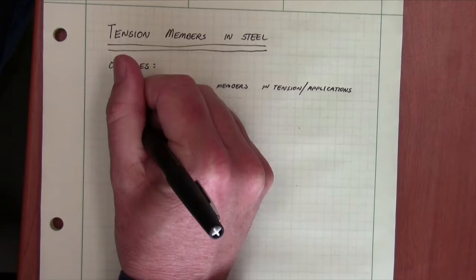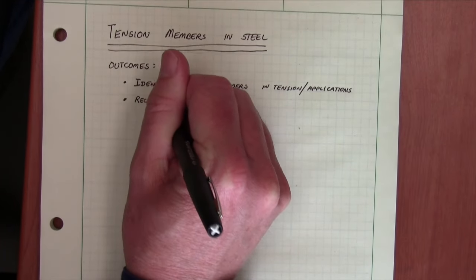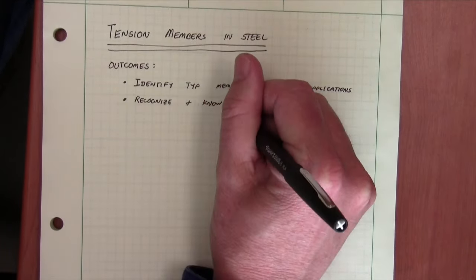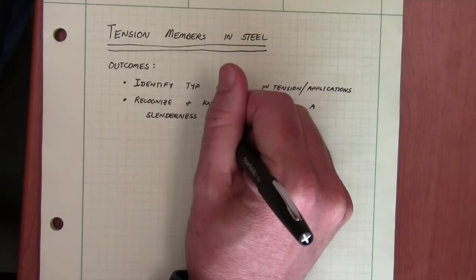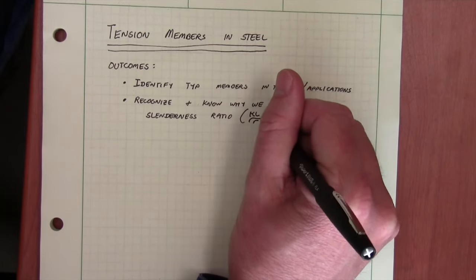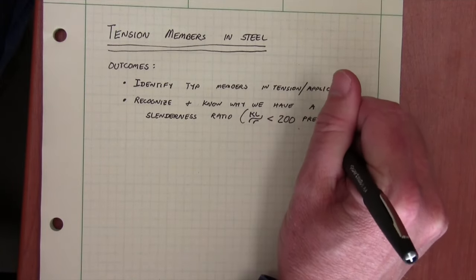Second, we'd like to recognize and know why we have a slenderness ratio with steel. The slenderness ratio is often KL over R less than 200. It's a preferred ratio, not a required ratio.